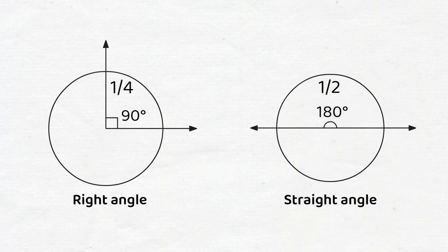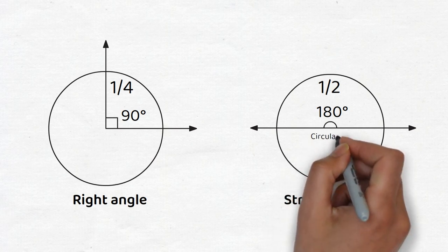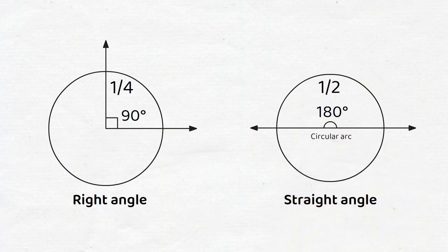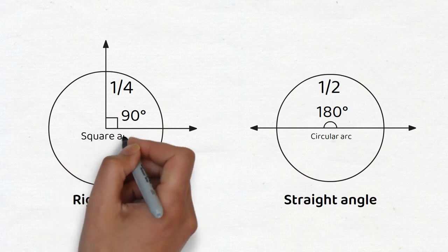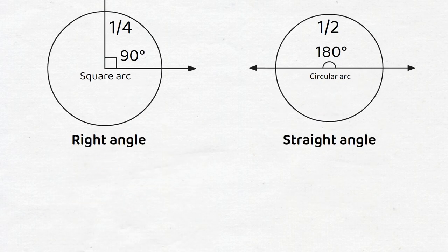Note that it's customary to denote angles by a little circular arc in a picture, but the right angle is the only angle whose standard picture is a little square arc.